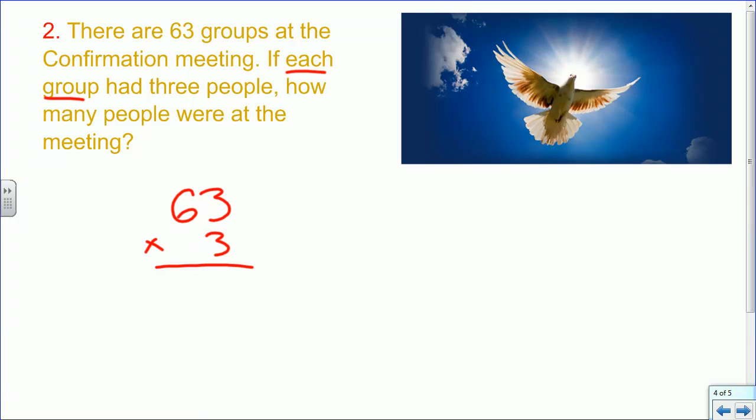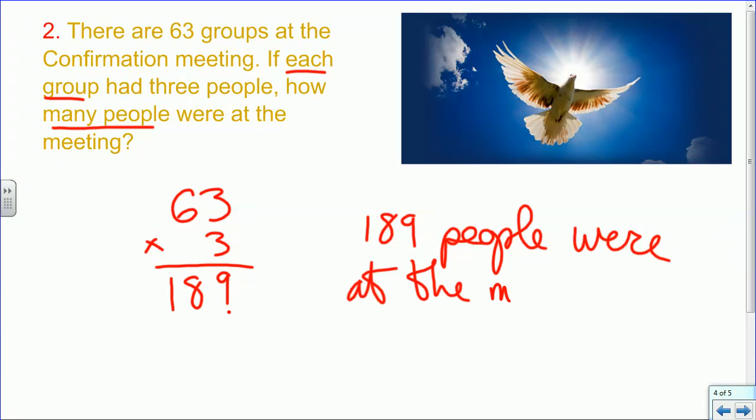63 times 3. First we'll multiply the ones place. 3 times 3 is 9. And then 3 times 6. We have 189. What's our question asking? How many people? Okay, so we have 189 people were, oh, that's a miserable were, at the meeting. Mrs. Beauvair is going to be upset with my handwriting. Okay, tried to fix it a little bit. 189 people were at the meeting.